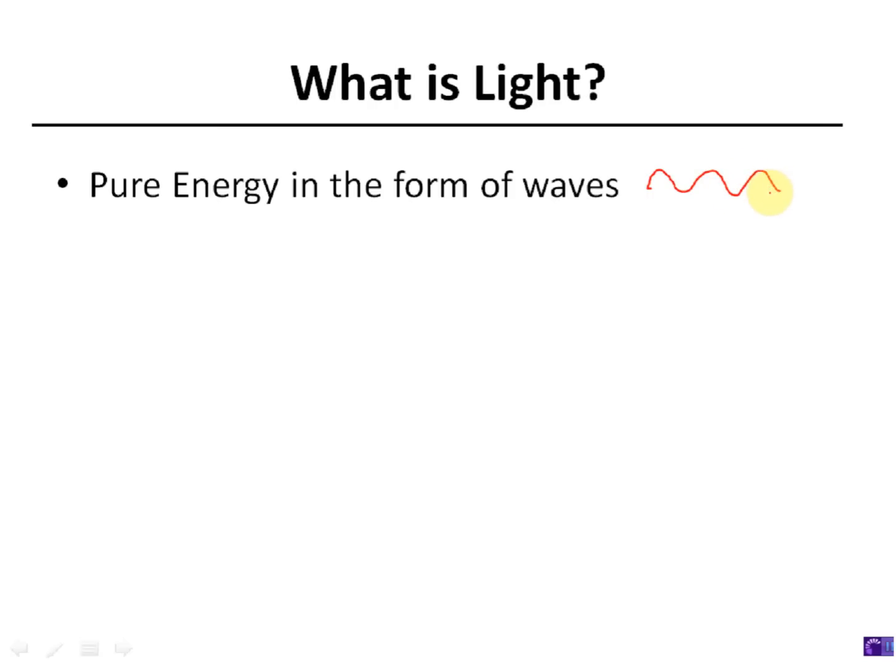And visible light is the ROY-G-BIV spectrum, red, orange, yellow, blue, green, indigo, and violet. Those are the colors of light that make up what we know as visible light. So it's simply energy in the form of waves.